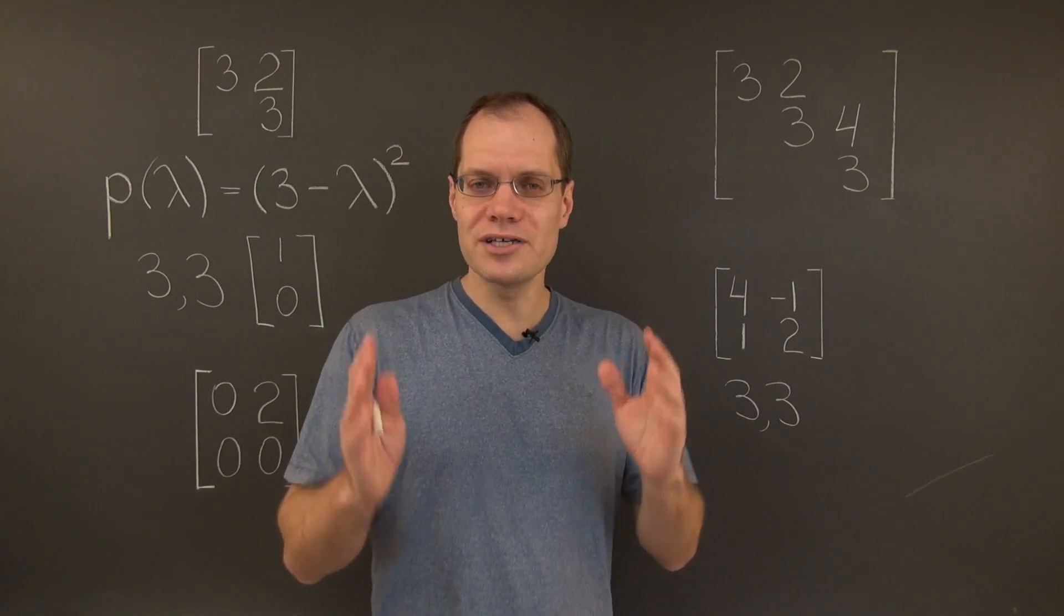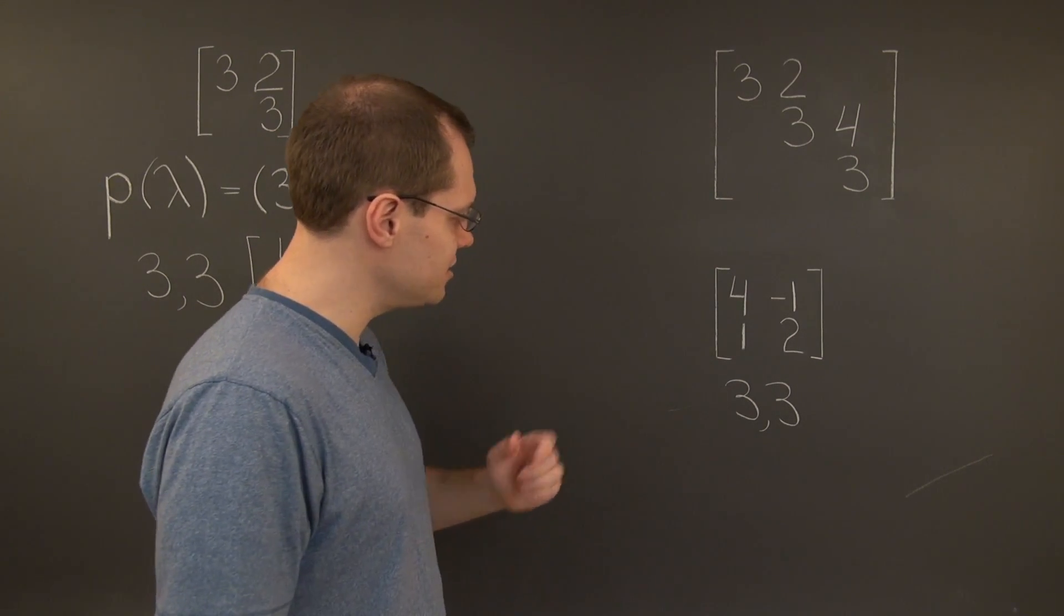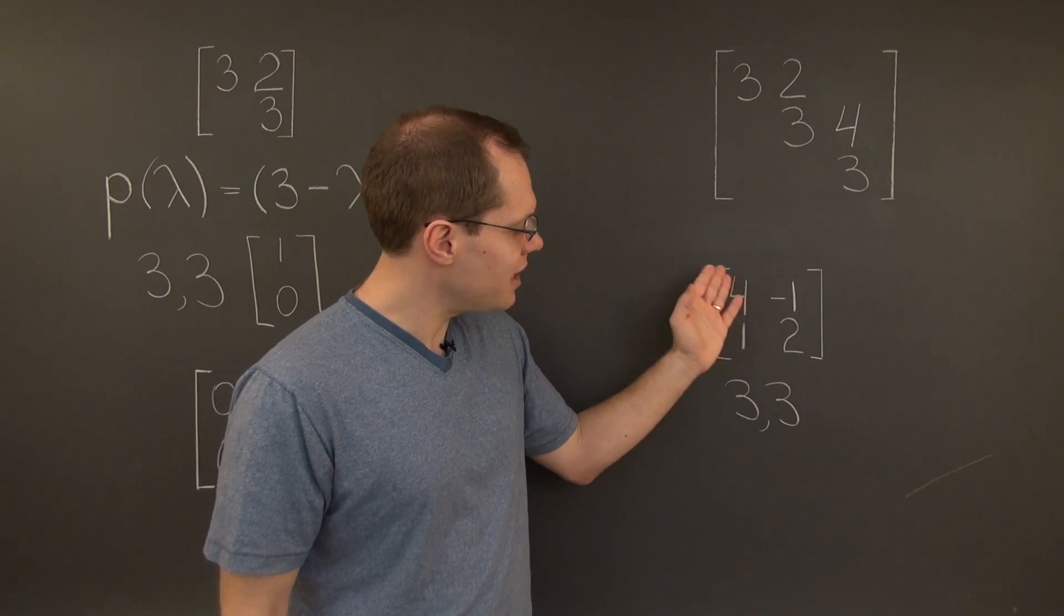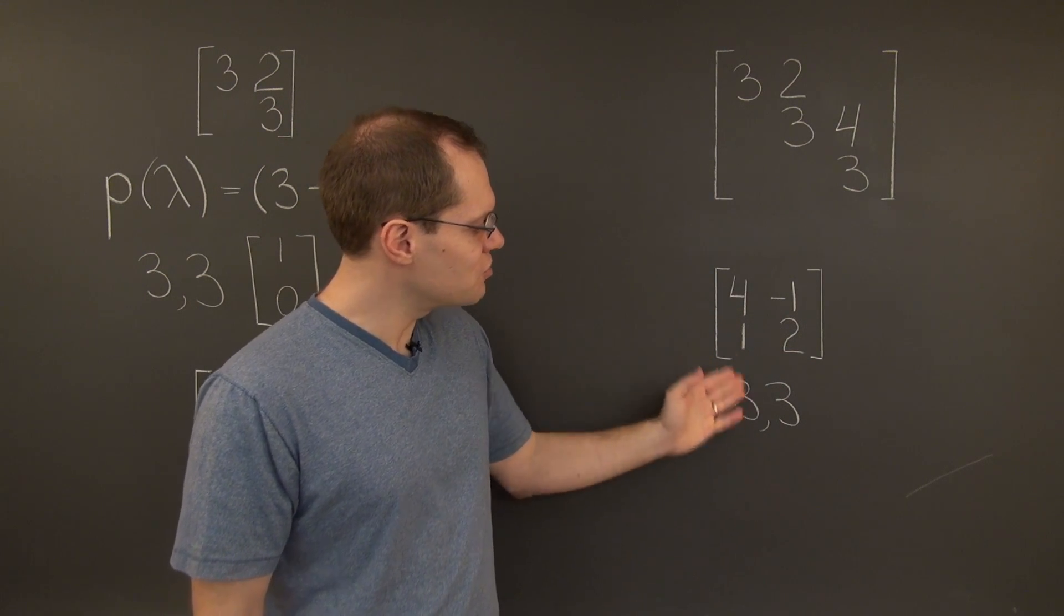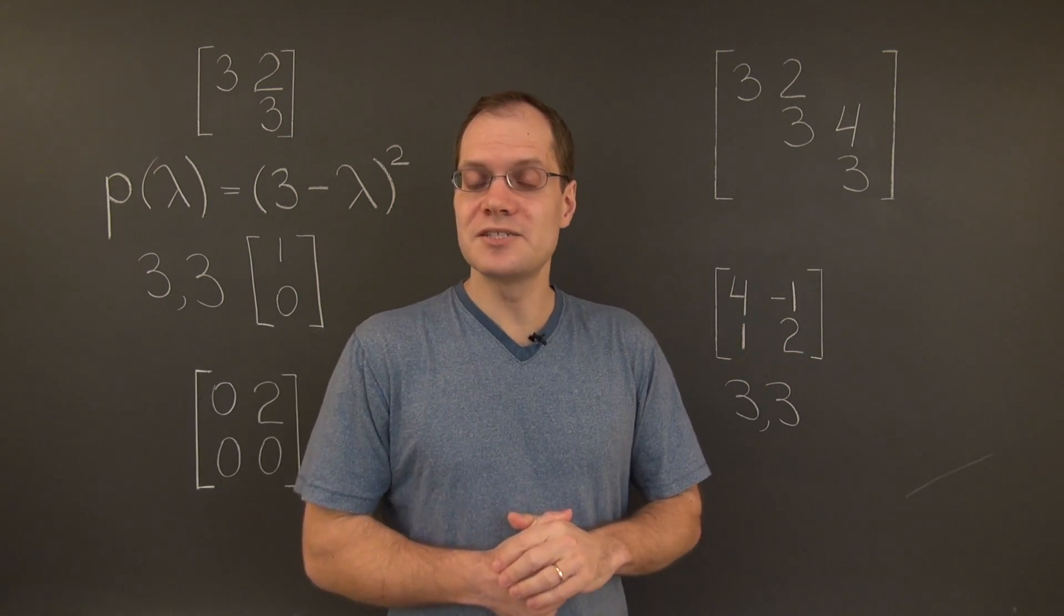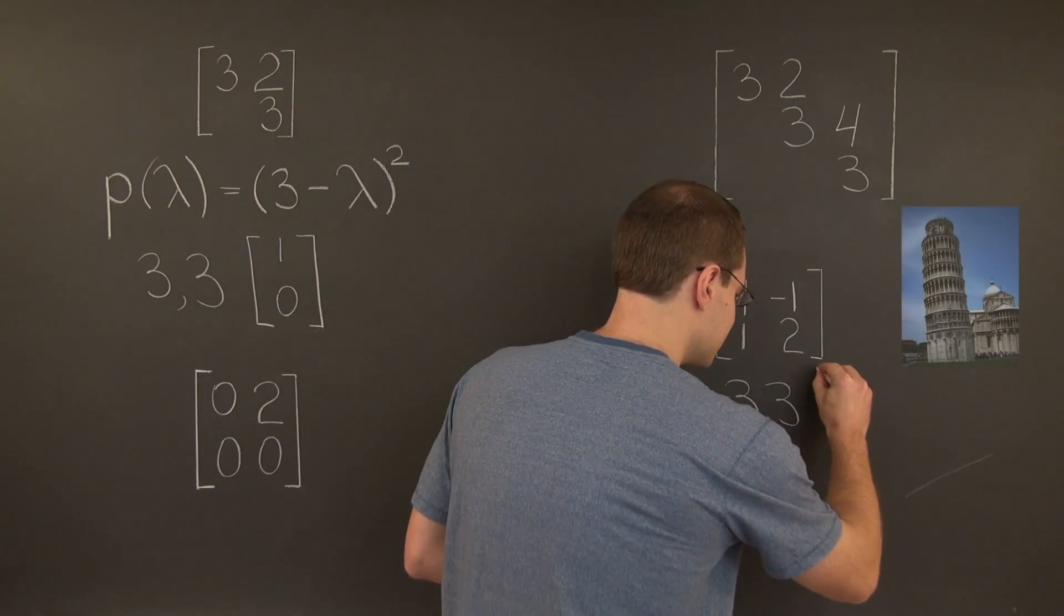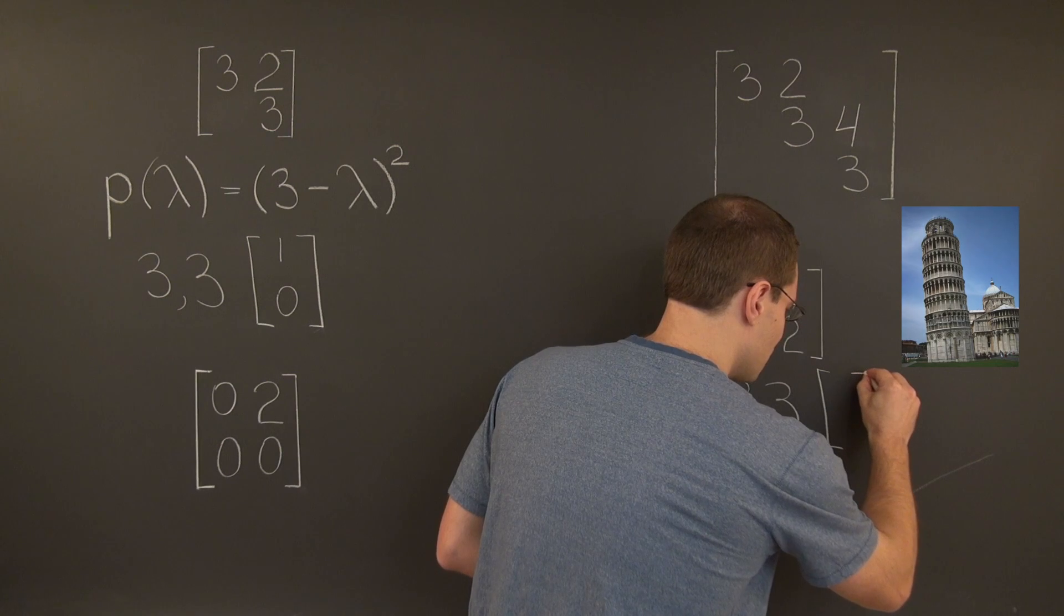What's the geometric multiplicity of this eigenvalue? In other words, what's the dimension of the corresponding eigenspace? Well, we can easily visualize what happens when we subtract 3 from the diagonal. We get a matrix whose null space is one-dimensional. More precisely, its null space is represented by the vector 1, 1.